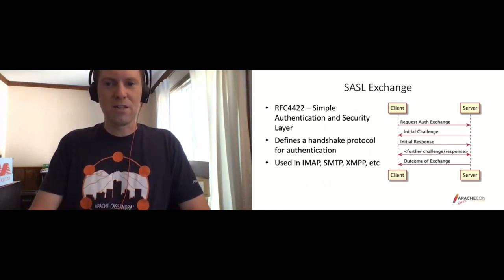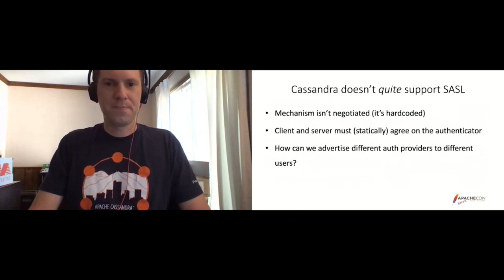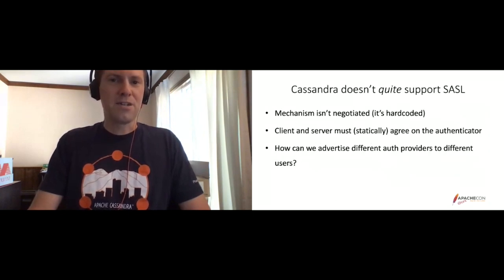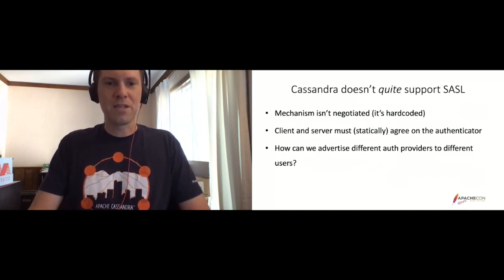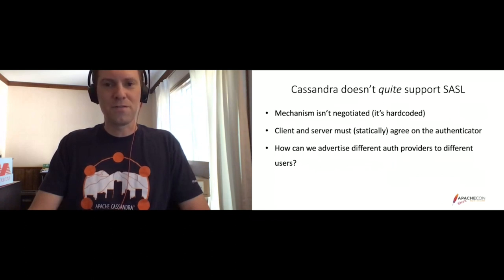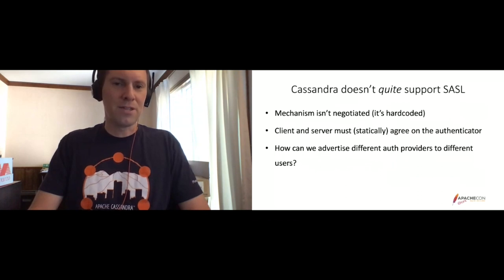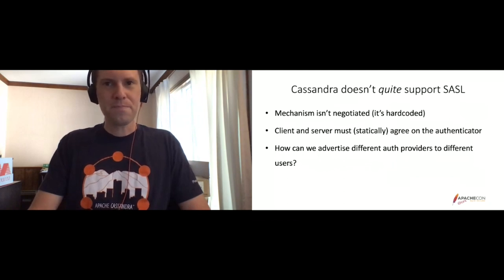Essentially the rest of it is challenge responses and an outcome. But Cassandra doesn't quite support SASL. For one, SASL itself provides a mechanism for the server to indicate to the client which mechanisms are supported. In Cassandra, it's not negotiated — it's basically something that's configured on the server side and configured separately on the client side. The client and the server have to statically agree on the authenticator, and if they don't agree, then authentication can't proceed.